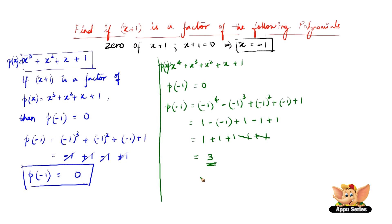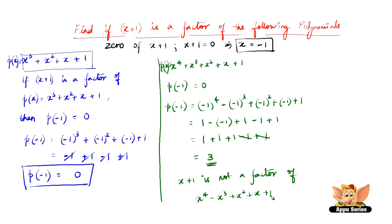We have 1 plus 1 plus 1 minus 1 plus 1, which gives 3, and 3 is not equal to 0. Therefore x plus 1 is not a factor of x to the power 4 plus x cubed plus x squared plus x plus 1.